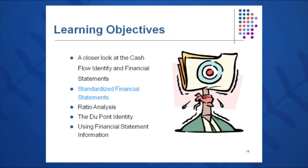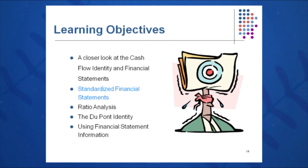We can compare these companies on a percent of sales or percent of asset basis. Standardizing financial statements is a way to do this. You can do it within your industry — certainly if Ford and GM are different sizes at different times during their lifespan, you can compare these companies by using standardized financial statements.